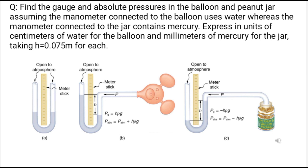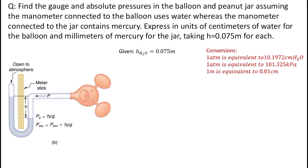Now let us solve this problem. Find the gauge and absolute pressures in the balloon and peanut jar, assuming the manometer connected to the balloon uses water whereas the manometer connected to the jar contains mercury. Express in units of centimeters of water for the balloon and millimeters of mercury for the jar, taking h equals 0.075 meters for each.